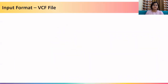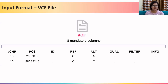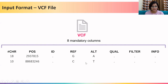Let us briefly revise a few details about the VCF file. The VCF file has eight mandatory columns: chromosome position, ID, reference base, alternate base, quality score, filter, and info. We keep four columns blank and use only the necessary information — the chromosome number, the chromosome position, the reference base, and the alternate base — for further downstream processing.